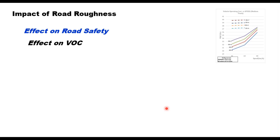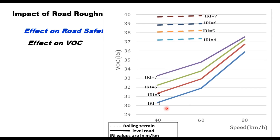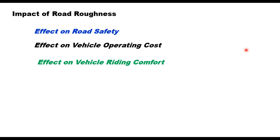The second is vehicle operating cost. Rough roads increase fuel consumption, tire wear, and vehicle maintenance cost. Studies indicate how vehicle operating cost increases with road roughness — shown here for IRI equal to 4, 5, 6, and 7 mm/km at varying speeds for level road and rolling terrain. The effect of IRI on crawling terrain is slightly less compared to level roads.